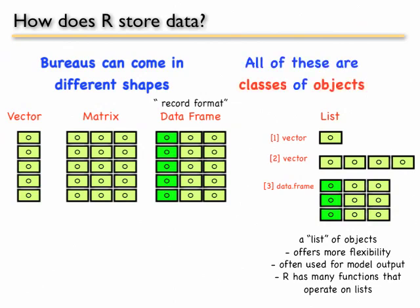All of these classes, all of these are classes of objects. The vector class, matrix, data frame, and list. The final type is called a function.